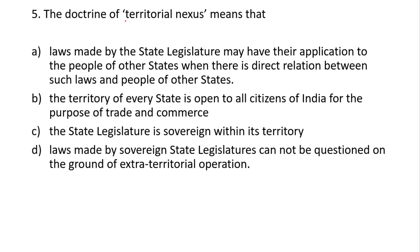Next question: the doctrine of territorial nexus means — laws made by the state legislature may have their application to the people of other states when there is a direct relation between such laws and the people of other states. The correct option is A. This doctrine means that state legislation can have extraterritorial reach when a sufficient nexus exists.